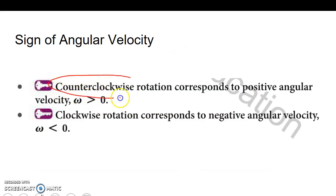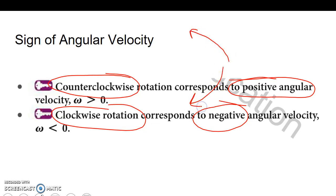Counterclockwise means we have a positive velocity. Clockwise means negative velocity. Keep those in mind. Counterclockwise as we go this way, positive. As we go this way, negative.